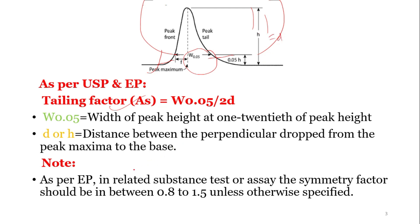As per the European Pharmacopoeia (EP), in related substance tests or assay, the symmetry factor should be between 0.8 and 1.5 unless otherwise stated. This means it should be greater than 0.8 and less than 1.5, and this is the standard condition followed in most pharmaceutical companies.